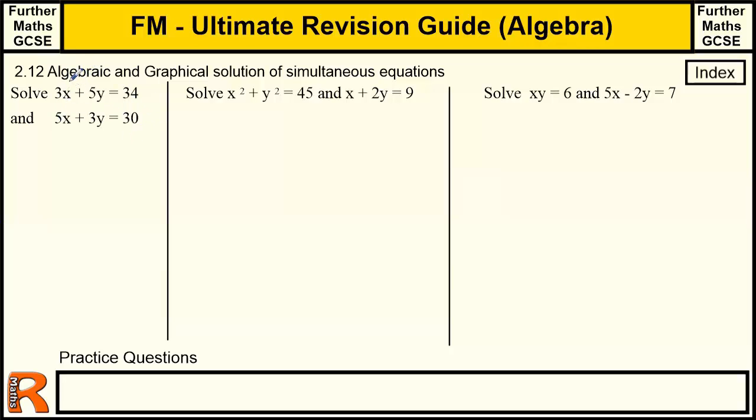to make either the X or Y the same. And clearly, if you've done this, you're going to have to multiply this top equation by 5 and this bottom equation by 3. And when you multiply an equation, you must multiply every term in the equation by the number to make sure it all balances out. If we do that, we'll get the top equation times by 5 is 15X plus 25Y equals 170. And the bottom equation times by 3 is 15X plus 9Y equals 90.